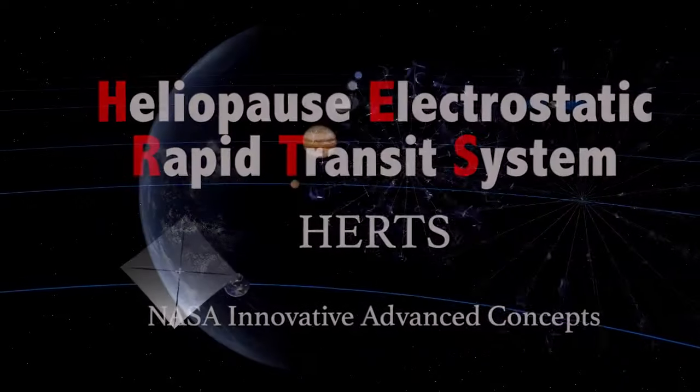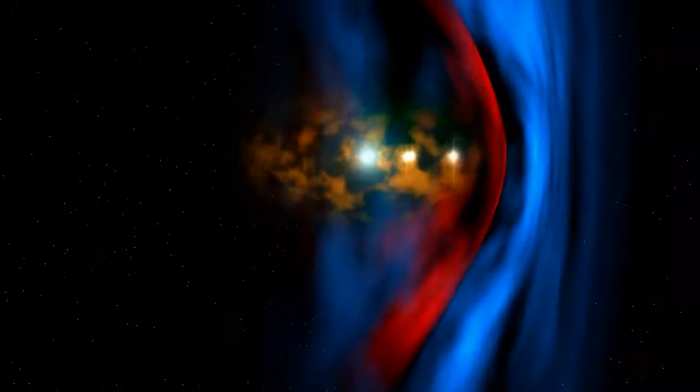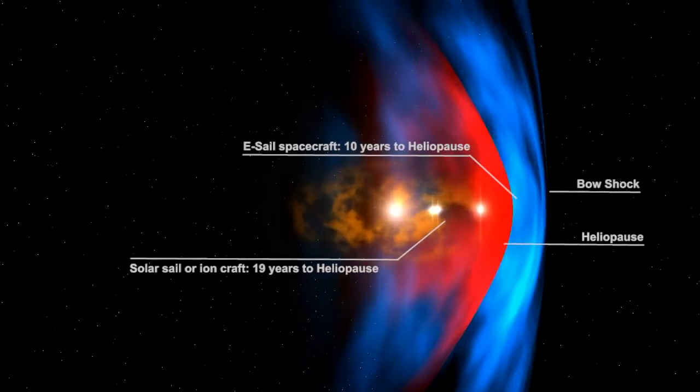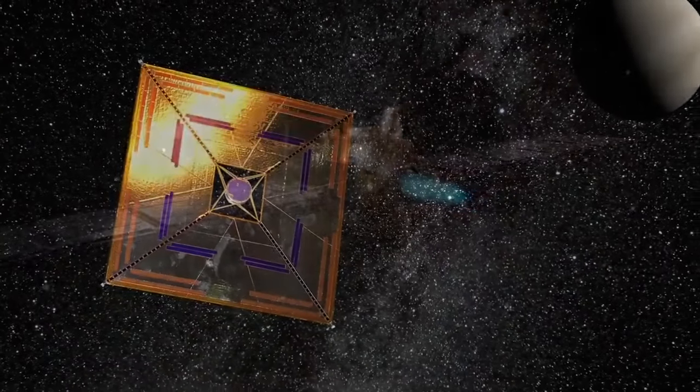The Hertz Electric Sail, or E-Sail, could send spacecraft to the edge of the solar system, known as the heliopause, approximately 100 astronomical units from Earth, in less than 10 years, much faster than any current propulsion system.